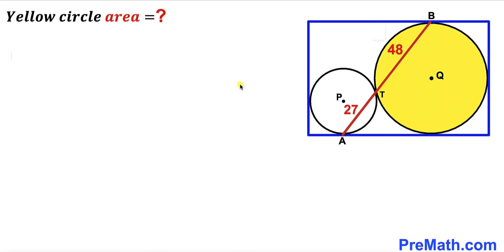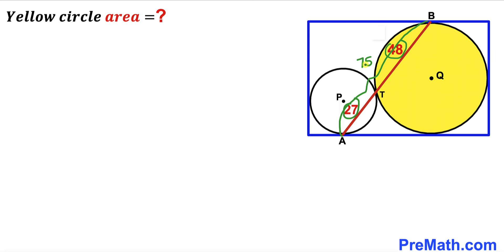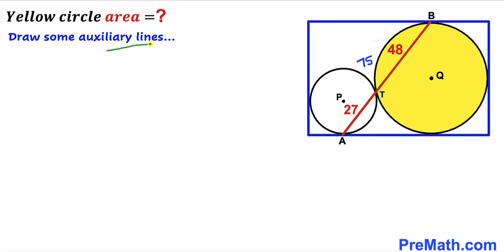Let's get started. We know that segment AT is 27 and segment BT is 48, so the whole segment AB is going to be 27 plus 48, which gives us 75 units. In the next step we are going to draw some auxiliary lines.